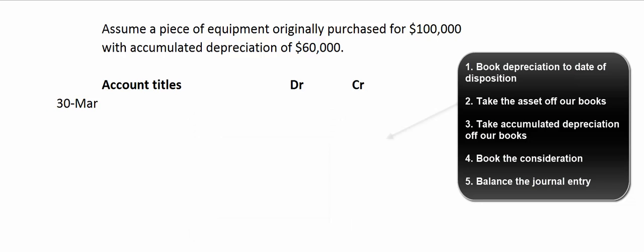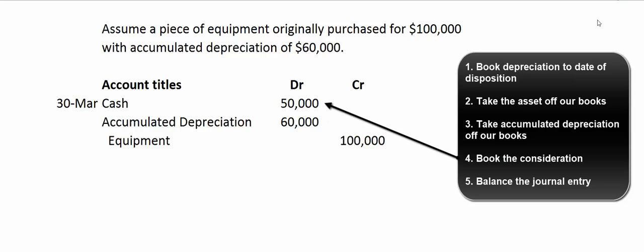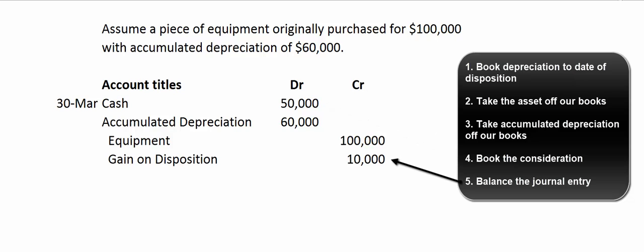Let's do it step by step. Let's assume all the depreciation expense has been booked to the date of the disposition. We'll take the equipment off our books — it originally had a debit balance of $100,000, so we'll credit equipment for $100,000. We'll take the accumulated depreciation off our books. Remember, accumulated depreciation is a contra asset account with a credit balance, so to make it zero, we're going to debit it for $60,000. Then we'll book the consideration — we get paid $50,000. Does that journal entry balance? We've got $110,000 worth of debits and $100,000 worth of credits — no, we need another $10,000 worth of credits. And sure enough, that's our gain on disposition.